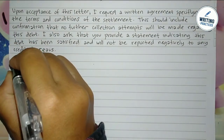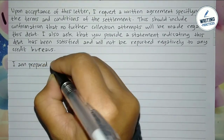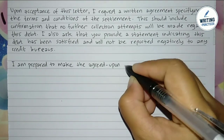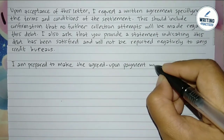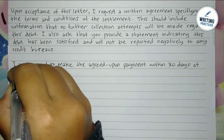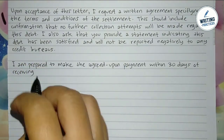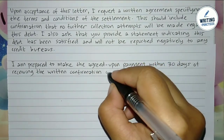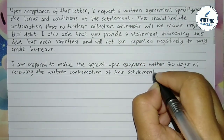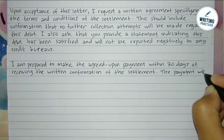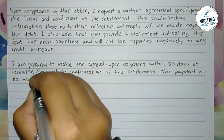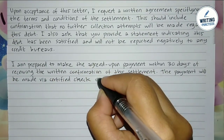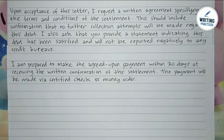In the sixth paragraph, you can talk about payment details. Write a proposal for payment timing — it can be within 30 days, two weeks, or similar. You can write: 'I am prepared to make the agreed upon payment within 30 days of receiving the written confirmation of this settlement.' You also need to mention the payment method, such as certified check or money order — for example: 'The payment will be made via a certified check or money order.'